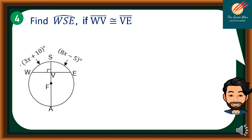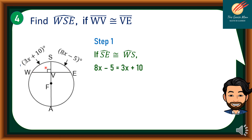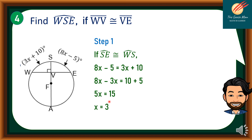Let's move on to problem number 4. Find Arc WSE if chord WB is congruent to chord BE. Arc WS equals 3X plus 10 degrees and Arc SE equals 8X minus 5 degrees. Since Arc SE is congruent to Arc WS, we substitute: 8X minus 5 equals 3X plus 10. Subtracting 3X and adding 5 to both sides gives 5X equals 15, so X equals 3.